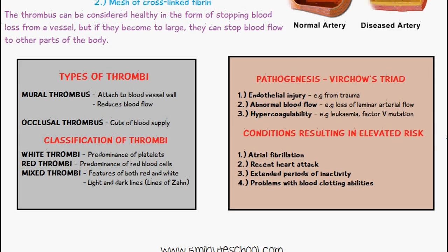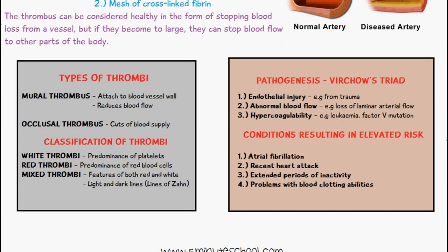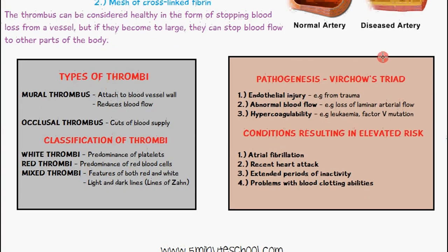In terms of what makes you more likely to have a thrombus, these features fall under Virchow's Triad. One factor is endothelial injury — if the endothelial wall of the blood vessel gets injured, you're more likely to develop a thrombus. Examples of this can come from trauma or other physical injury.